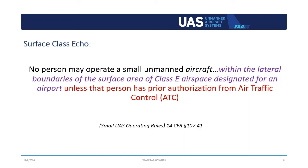Now let's take a look at another type of Class Echo airspace: Surface Class Echo. This type of airspace causes the most confusion. The regulations clearly state that operations within the lateral boundary of the surface area of Class Echo airspace designated for an airport require airport authorization. So what is Surface Class Echo airspace and how do you know when it's designated for an airport?